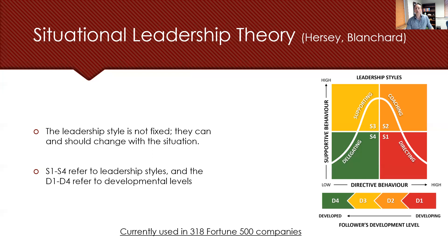D3 are individuals who are moderately high to high in competence but somewhat lower in commitment. They have the skills to do the job but require active and ongoing support to boost their willingness to invest the time and effort to perform at their maximum. D4 are individuals at the apex of their developmental scale — they have the confidence and competence to complete the task and exhibit high-level commitment, like a master teacher who inspires younger teachers through their work ethic and enthusiasm.